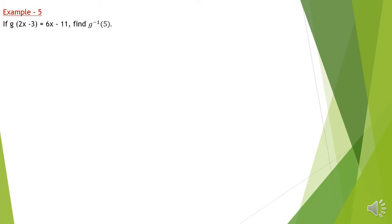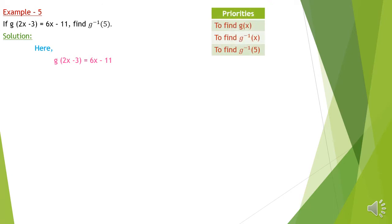Example 5 is a little different. You can see g(2x−3) = 6x−1. We have to find the inverse, but before finding the inverse we have to do one very important task. Our priority is to find g(x) first — we don't have g(x). We have to convert this function where the input is 2x−3 into a standard g(x) form, which we already learned in class 9. Then we can find g⁻¹ and g⁻¹(5).